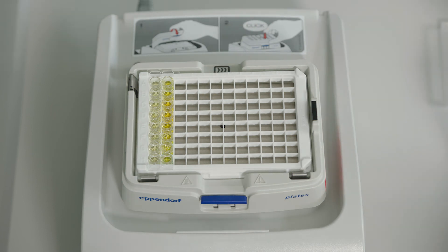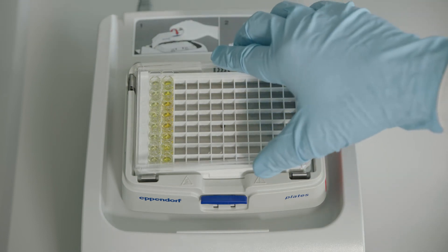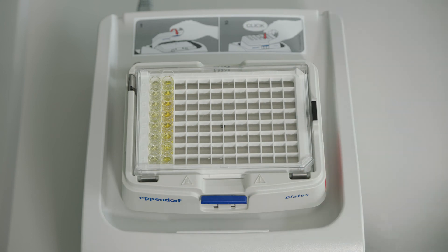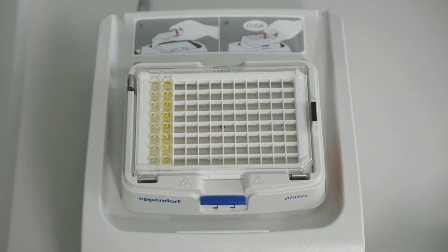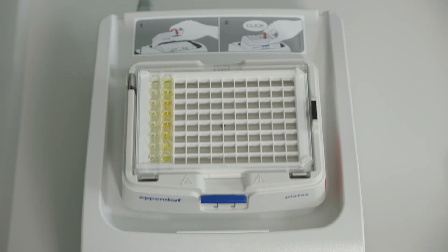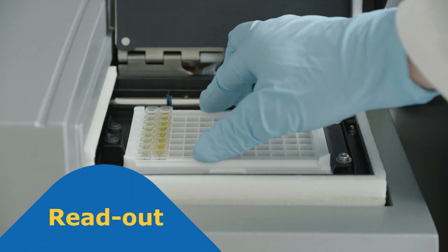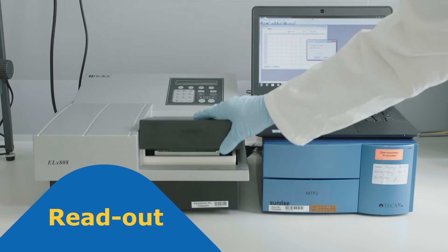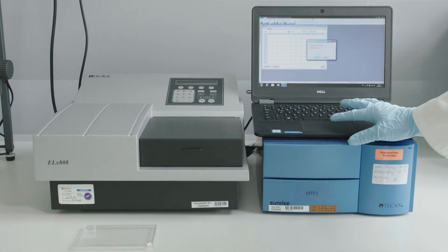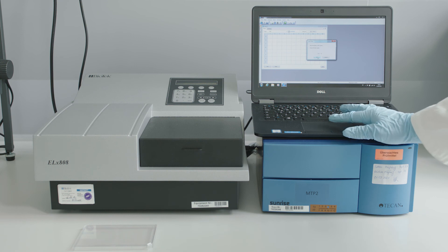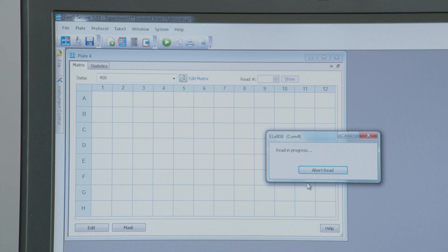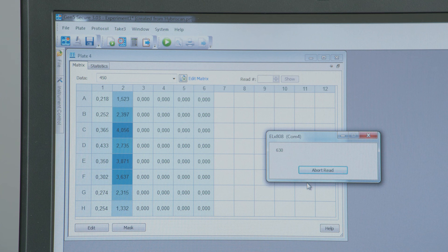Place the microplate in a microplate reader and measure the optical density in each well at 450 nanometers. The blank and negative samples should be white to slightly yellow, while positive samples or controls should show a stronger yellow tone. Qualitative results can be read with the naked eye after placing the plate on a white background.